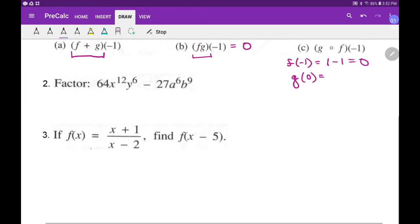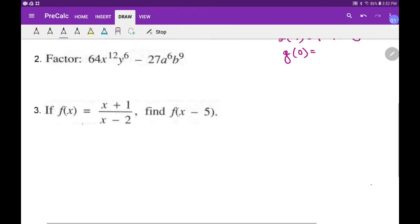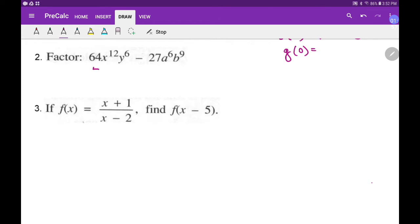Let's see. We have, oh, this is four to the third, right? And this is x to the fourth to the third. And this is y squared to the third. And this is three to the third. And this is a to the second to the third. And it's b to the third to the third.